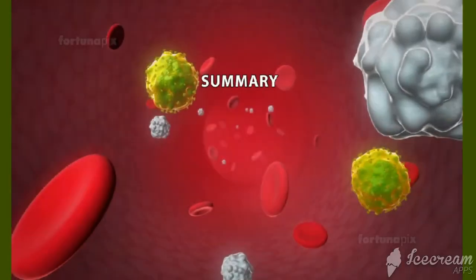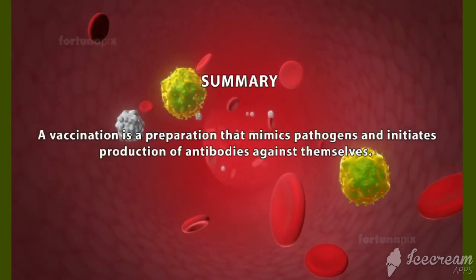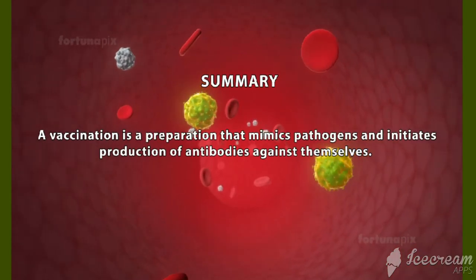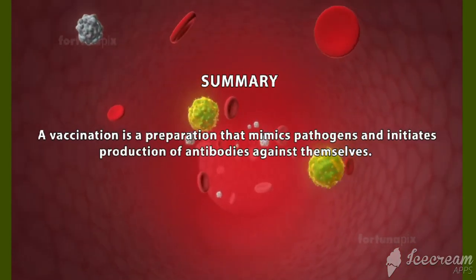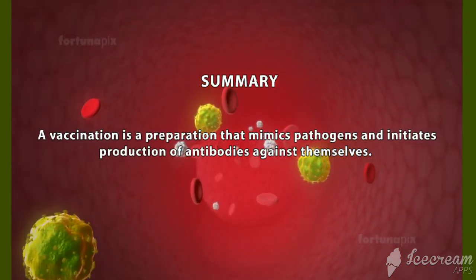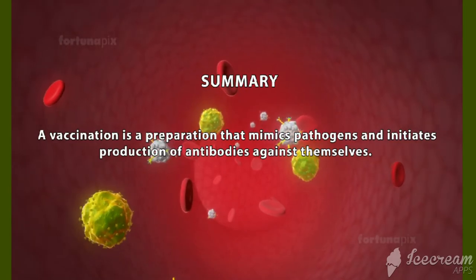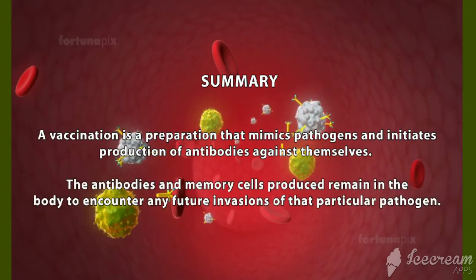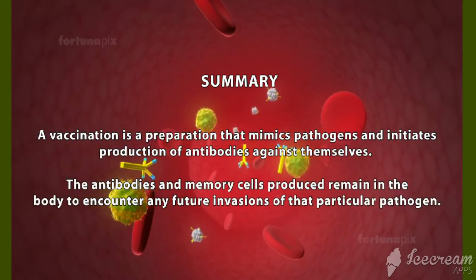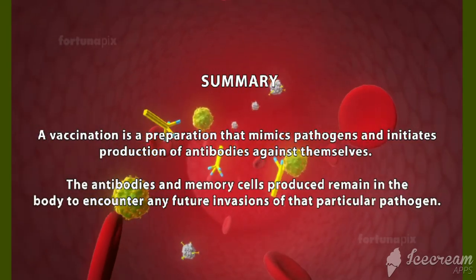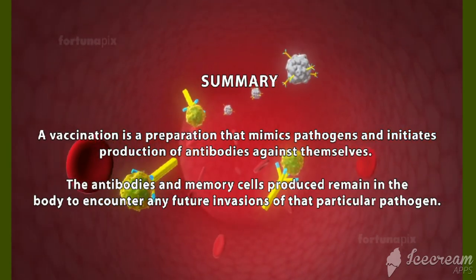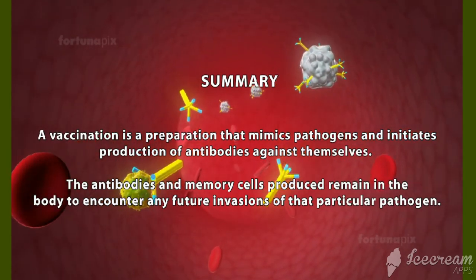Summary: A vaccination is a preparation that mimics pathogens and initiates production of antibodies against themselves. The antibodies and memory cells produced remain in the body to encounter any future invasions of that particular pathogen.